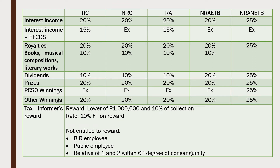Here is a whole overview of the relevant rates for final income tax. The first column enumerates the types of income subject to final tax, and then per type of individual taxpayer: RC, NRC, RA, NRA-ETB, and NRA-NETB. You have to memorize these rates. The last one is the tax informer's reward — the reward will be the lower of 1 million pesos or 10% of collection, and the rate on that is 10% final tax.